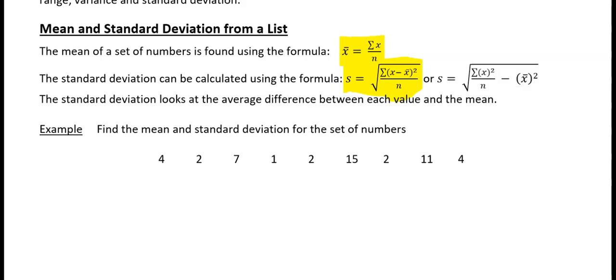And then or, and this is a more useful one, it is s is equal to the square root of sigma x squared over n minus your mean squared. We're going to look at how we use this in this example.